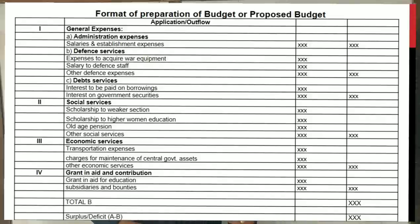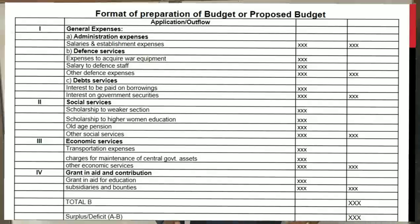Social services expenditure includes scholarships for weaker sections such as SC/ST students and backward classes — covering books, fees, laptops, and scholarships for higher education. Women's education and higher education are also important areas of spending. The government also pays for old age pension for people above 60 years who are below the poverty line (BPL), and other social services.